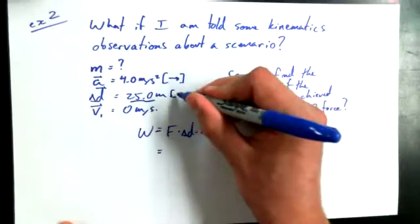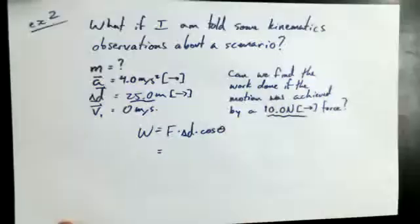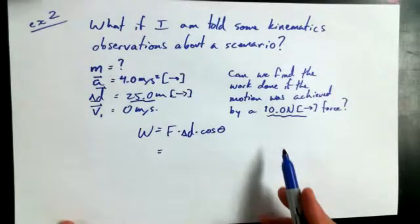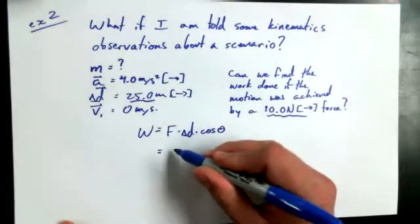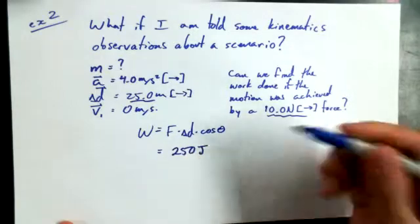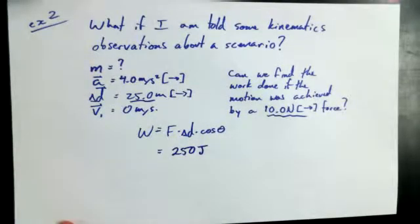Yeah, you're right, we should make note that it's going in the same direction. Otherwise, we're going to have negative work here. This is a pretty easy part. 25 times 10, 250 joules in this case, and if they're collinear, then that's going to be cosine of 0, which is 1.